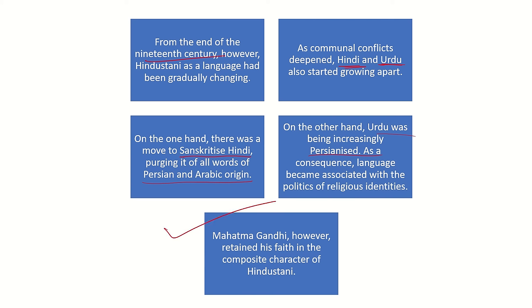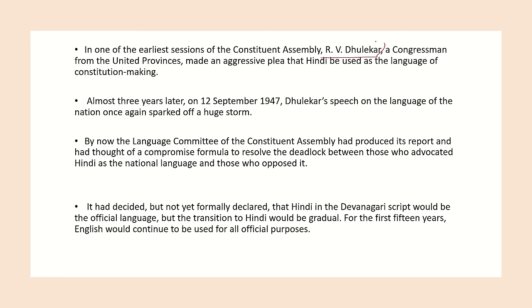Although Mahatma Gandhi still maintained that Hindustani should be the nation's language, in one of the earliest sessions of the Constituent Assembly, R.V. Dholekar, a Congressman from United Provinces, pleaded that Hindi should be used as much as possible in making the constitution. Three years later, on 12 September 1947, when he gave his speech, an intense debate began immediately over which language would become the country's language. A Language Committee was also formed among the many committees and sub-committees.